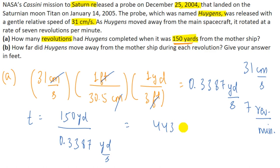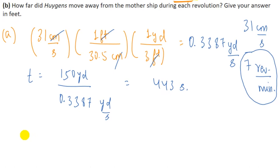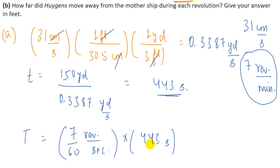Now, the RPM is 7 revolutions per minute. To find total revolutions, we convert to revolutions per second by dividing by 60, giving 7/60 revolutions per second, then multiply by 443 seconds. This gives 51.6 revolutions. So the total completed revolutions is 51. This is the answer for part A.